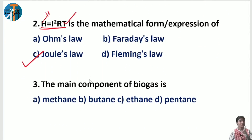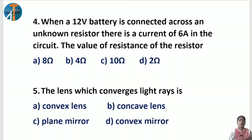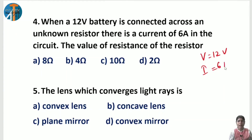Third question is from Sources of Energy. Always identify which lesson each question belongs to. The main component of biogas — this is a very important question I specified earlier. The main component of biogas is methane, option E. Fourth question: when a 2-volt battery is connected across an unknown resistor, there is a current of 6 ampere. Find the value of resistance. Here V = 12 volt and I = 6 ampere.